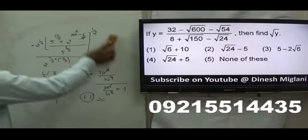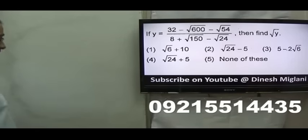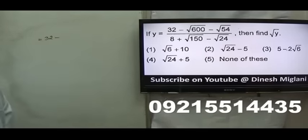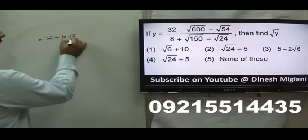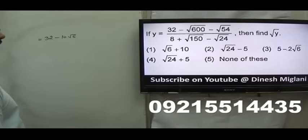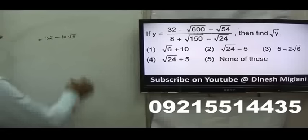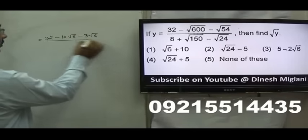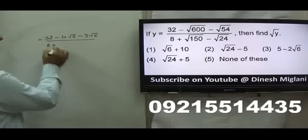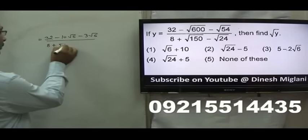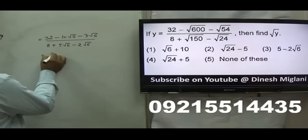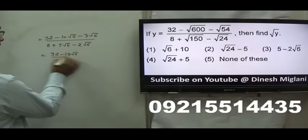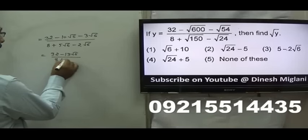Next question: y is given to us and we have to find √y. When I observe this question, I try to find what could be taken as common. For 32 − √600, I can say that is 10√6. For √54, if I take 3 common outside, that would be −3√6. In the denominator, taking 5 common gives 5√6, and 2 common gives 2√6. So I am getting (32 − 13√6) in the numerator and (8 + 3√6) in the denominator.